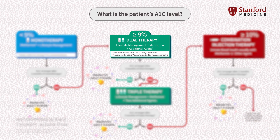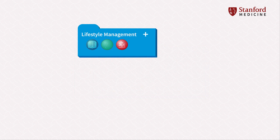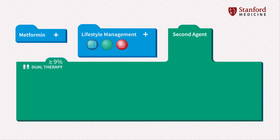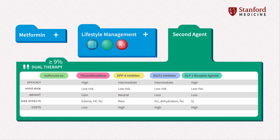The next step is dual therapy, where we see examples of how to balance multiple agents in treatment. Dual therapy is suggested for patients with an A1C equal to or greater than 9%, but less than 10%. Treatment includes lifestyle management strategies, metformin, and an additional agent. Possible secondary agents include SGLT2 inhibitors, GLP-1 agonists, DPP-4 inhibitors, TZDs, second-generation sulfonylureas, and insulin. Patient factors play a critical role in deciding which agents will be best. For example, a TZD would be contraindicated for a patient with a history of congestive heart failure, as these agents have the potential for increased water retention and weight gain.